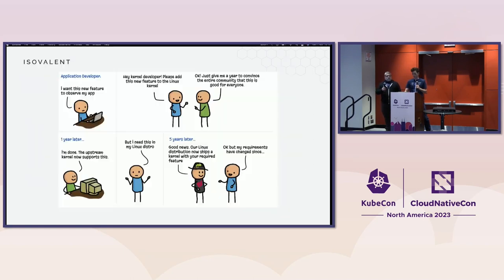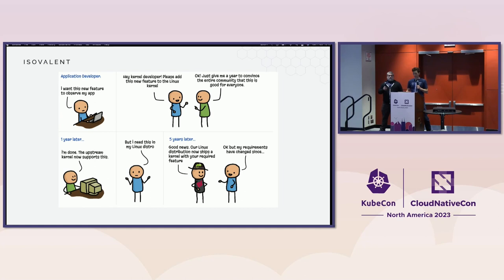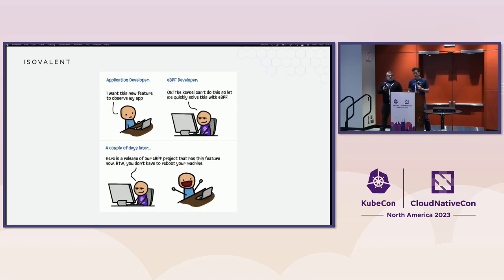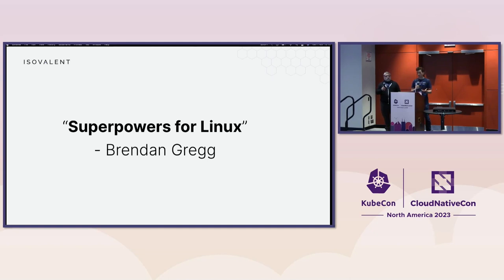In the old days, it could take you five years to get something from a user demand about what you need in your Linux kernel to it actually being available in production. This is a very long cycle. Instead, with eBPF, we can now do that in a couple of days. And this drastically reduces the innovation cycle and what we can instrument and provide for our applications. And in the words of Brendan Gregg, this kind of gives superpowers to the Linux kernel.